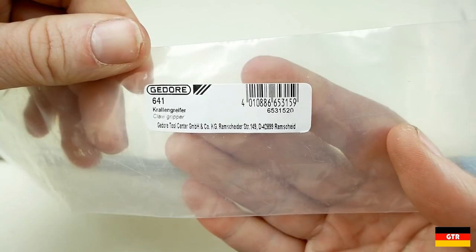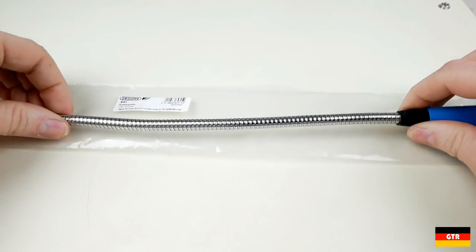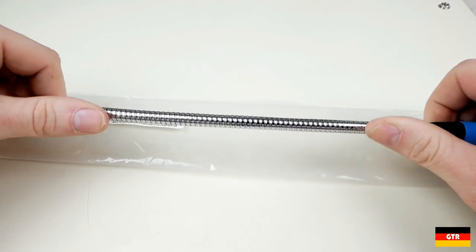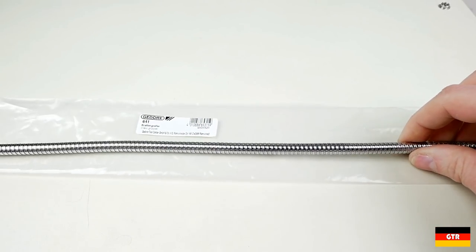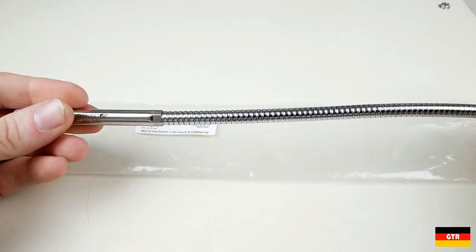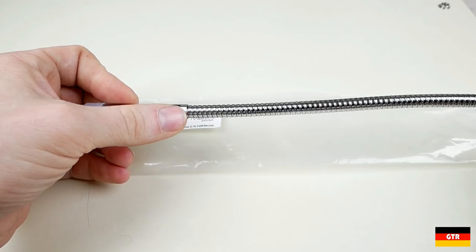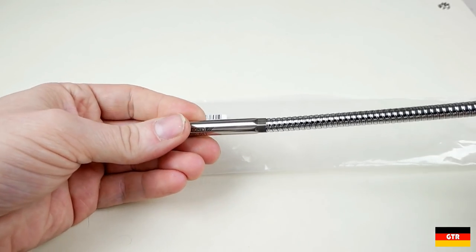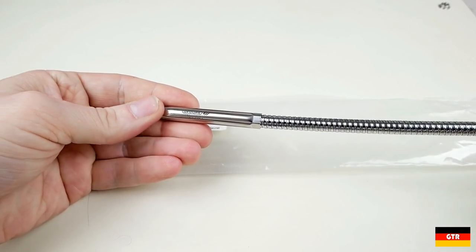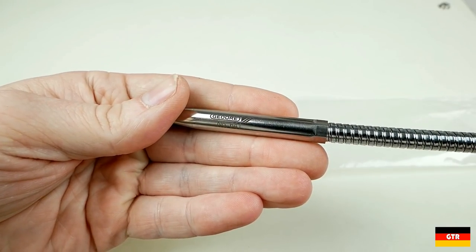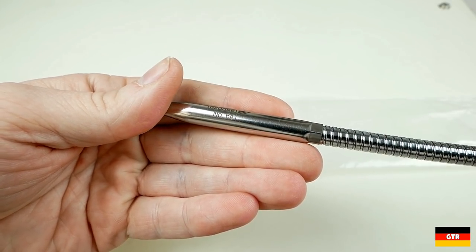As you can see here this is the package that it came in. So apparently this is made in Germany according to the KC Tool website. I don't see any markings on the package or the tool itself that indicates that. I guess it's always possible that that information is incorrect, but as far as I know that's the case. And you can see here it's laser etched with Gedore 641.